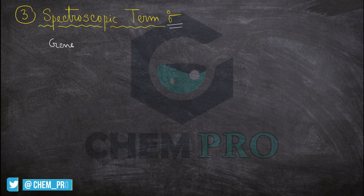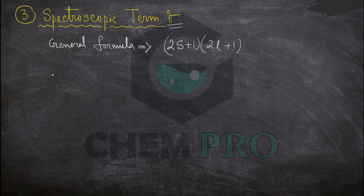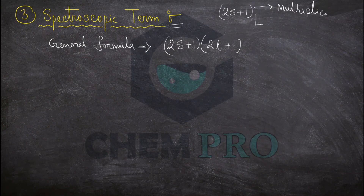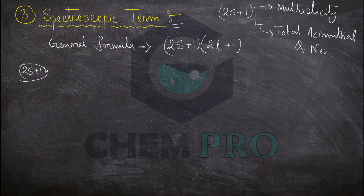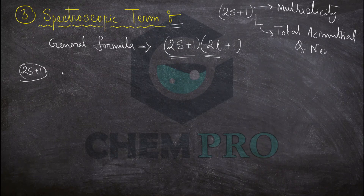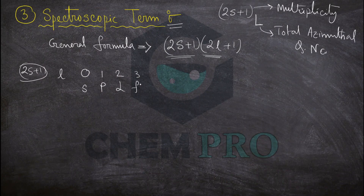The next method is using the spectroscopic term. The general formula is: number of microstates = (2S+1) × (2L+1). In the spectroscopic term 2S+1L, the 2S+1 is the multiplicity and L is the total azimuthal quantum number. We already have the 2S+1 value from the term, and we calculate 2L+1 based on the letter: L=0 is S, L=1 is P, L=2 is D, L=3 is F.